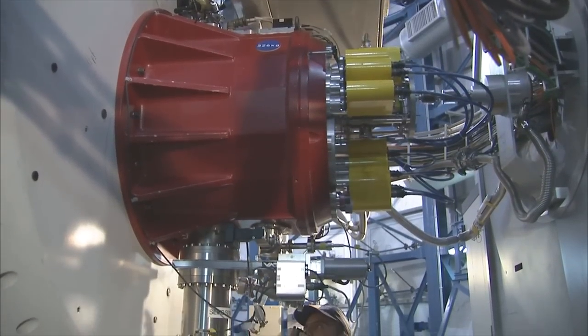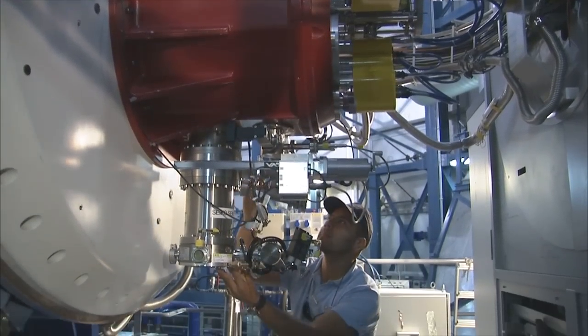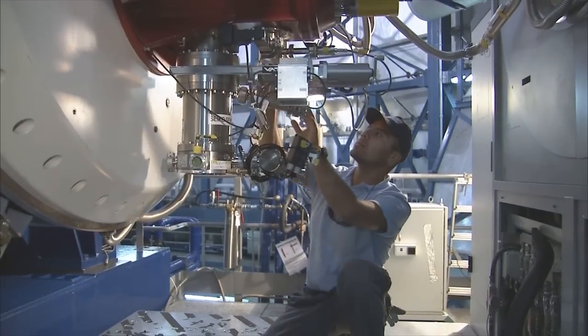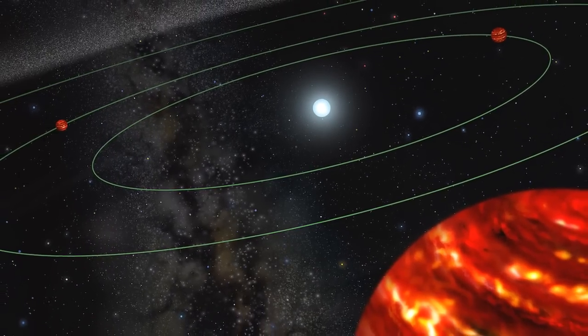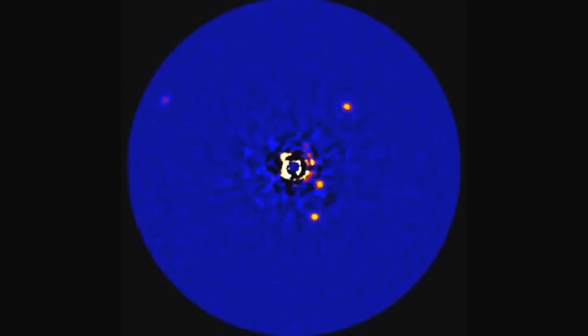In 2004, NACO, the adaptive optics camera on the very large telescope, took the first image ever of an exoplanet. The red dot in this image is a giant planet orbiting a brown dwarf star. In 2010, NACO went one step further. This star is 130 light-years away from Earth. It is younger and brighter than the Sun, and four planets circle around it in wide orbits.